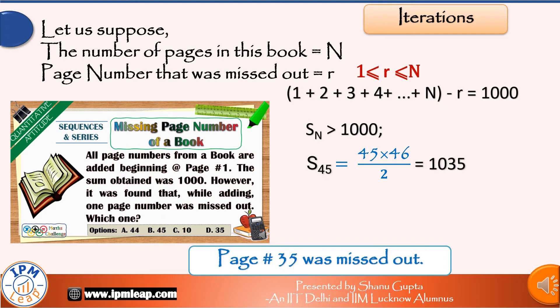What if there were 46 pages in the book? Well, sum of first 46 natural numbers is 1035 + page number 46 = 1081. That means in this case, 1081 - 1000 = page number 81 was missed out. But in a book with 46 pages, page number 81 does not exist, isn't it? So this is not possible.